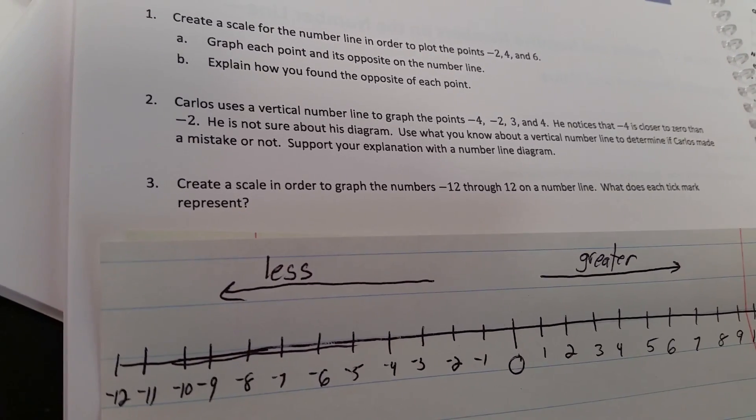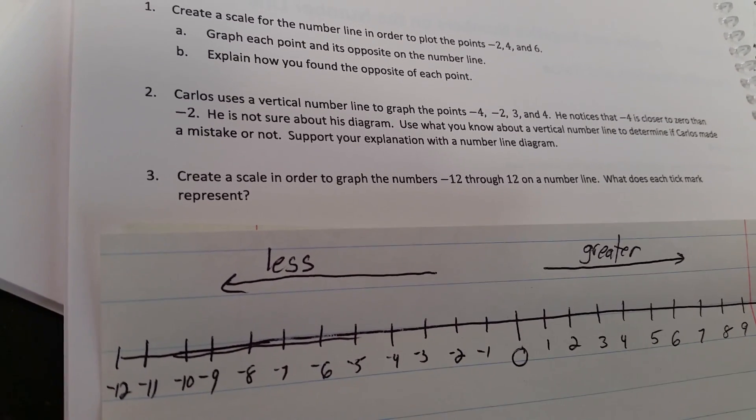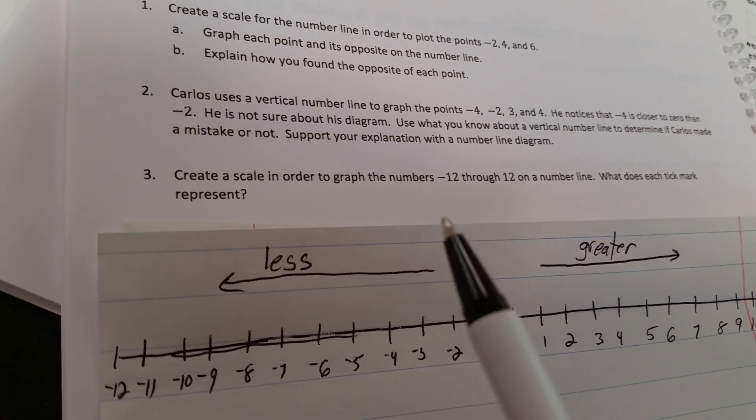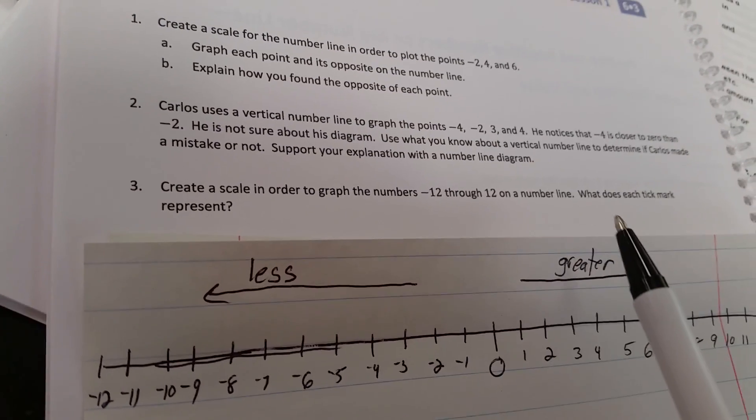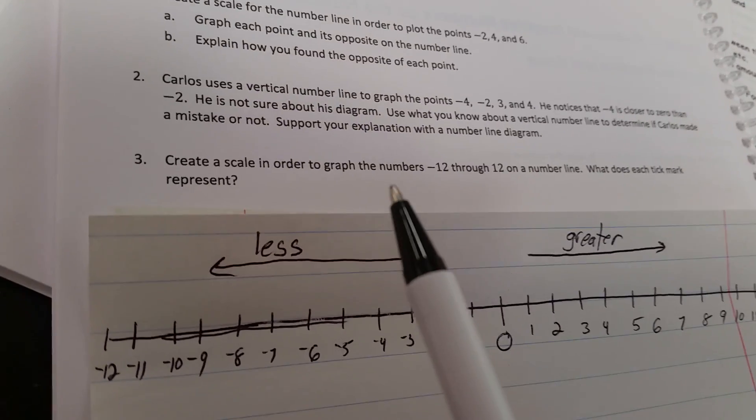Okay, this is module 3, lesson 1, problem set, question number 3. Create a scale in order to graph the numbers negative 12 through 12 on a number line. What does each tick mark represent?